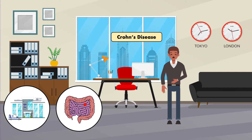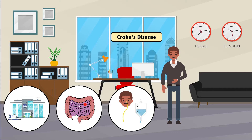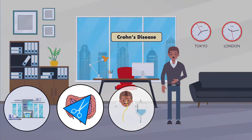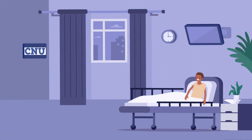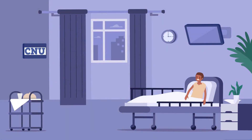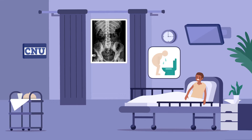Marcus was initially treated with IV fluids and nasogastric decompression in an attempt to avoid surgery. However, this was ultimately unsuccessful. On hospital day number three, he underwent a small bowel resection to resolve the issue. The day after surgery, his diet was advanced to clear liquids, but he vomited shortly after drinking them. Imaging revealed a post-operative ileus, and he was made NPO.